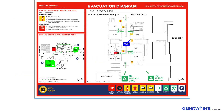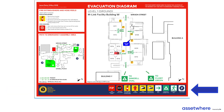This is an example of an evacuation map from Kerry Baptist Grammar School in Victoria, showing their school logo, the legend they've included, and key details that are included on every map.